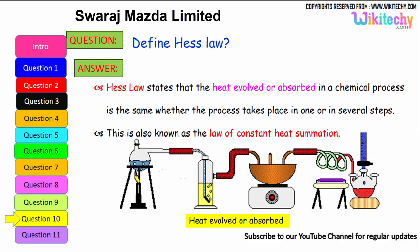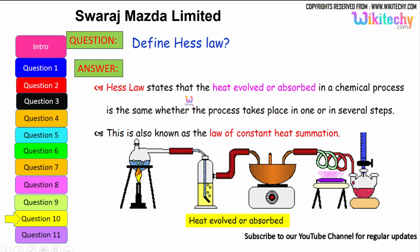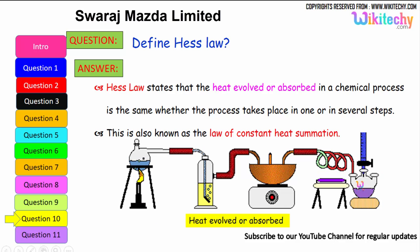Define Hess's Law. This is one of the very important questions, in the context of generating heat between an object and its emissions. Hess's Law states that the heat evolved or absorbed in a chemical process is the same whether the process takes place in one or in several steps. This is also known as the law of constant heat summation.